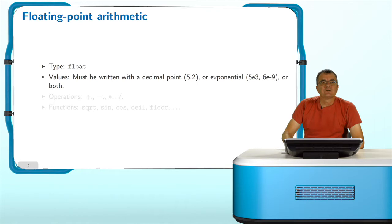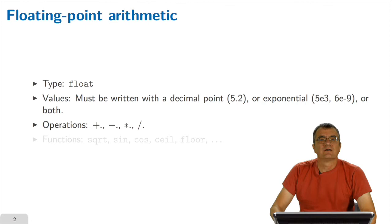The values of floating point numbers are always written in a way which allows to indicate the fact that you really have a floating point number and not an integer. Which means you have to use either a decimal point or an exponential or even both. In the same way, the operators on floating point numbers have also to be written with a dot at the end. So you have plus dot, minus dot and so on.